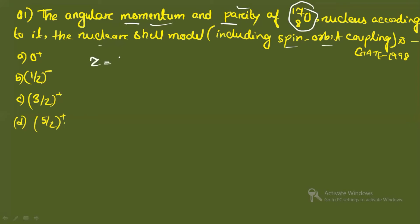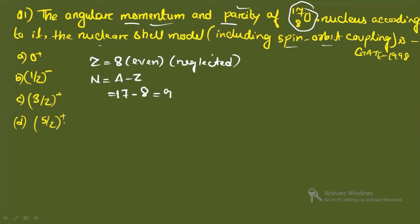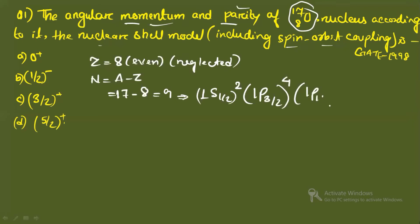For this, we check the number of protons and neutrons. The number of protons is 8 and the number of neutrons is A minus Z, so 17 minus 8 equals 9. Since the proton number is even, it is neglected — even numbers of protons and neutrons do not contribute to momentum and parity. We write energy levels only for the 9 neutrons: 1s1/2 fills 2, 1p3/2 fills 4, 1p1/2 fills 2 — that's 8 total — then 1d5/2.